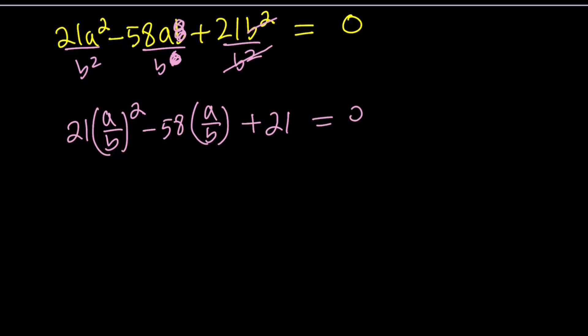This equation is easy to solve if you make the substitution a/b = c. Any variable is fun, but I like c because it's a, b, c. Now we get 21c^2 - 58c + 21 = 0.